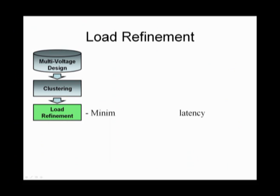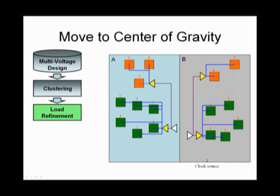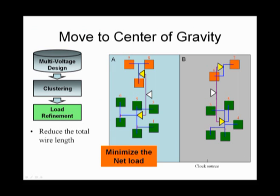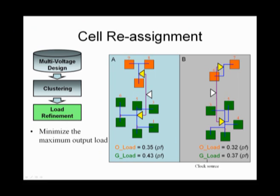Next step, we will minimize the clock tree latency. After insert the buffer and connect with flip-flops, we move the buffer to the central point. So, we can minimize the net load. Here, we also minimize the maximum output load. We calculate the load of cluster flip-flops. Next step, we assign the flip-flops. We assign the flip-flops in the maximum load cluster to nearby cluster.